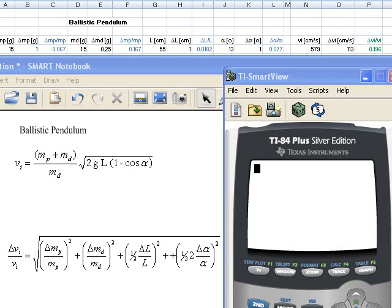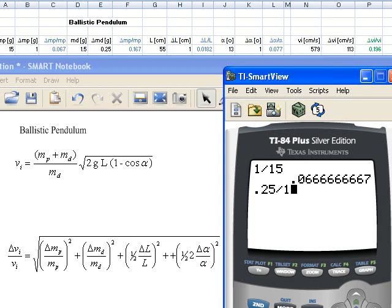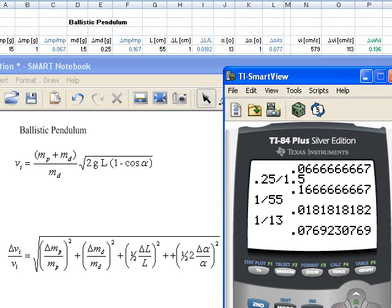So mass of the pendulum is 1 divided by 15, that's the relative or percentage error for that, that's why I said a little bit less than 10%, so 6.7%. The mass of the foam dart, so 0.25 divided by 1.5, a little bit more than 10%, so 16.7%. The length, 1 divided by 55, a little bit less than 2%, 1.8%, and the angle 1 divided by 13, also a little bit less than 10%, 7.7%.